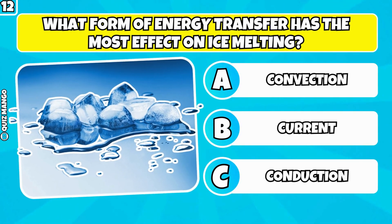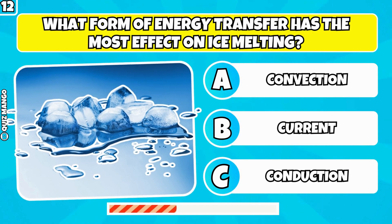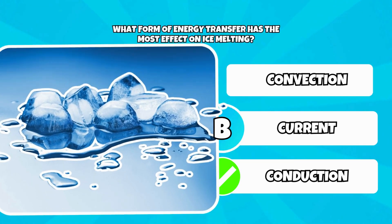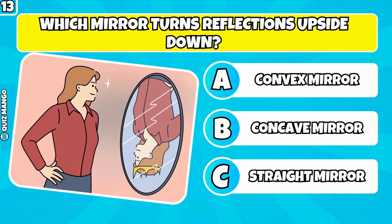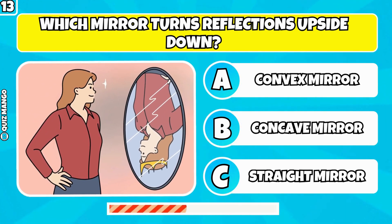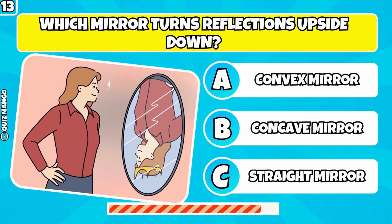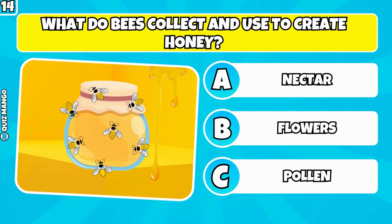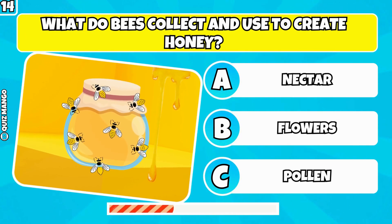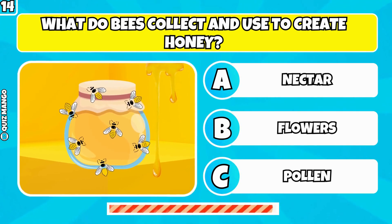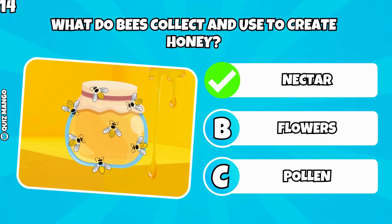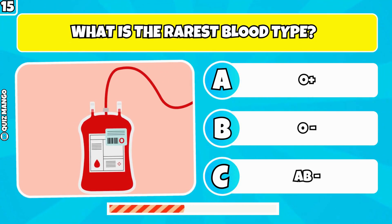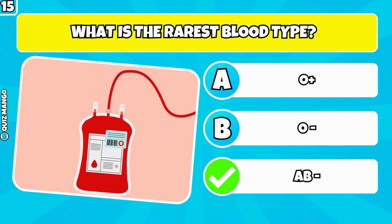What form of energy transfer has the most effect on ice melting? It's conduction. Which mirror turns reflections upside down? It's a concave mirror. What do bees collect and use to create honey? It's nectar. What is the rarest blood type? It's AB negative.